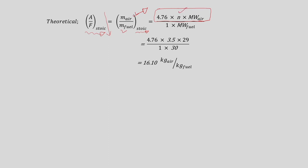Calculating this value: 4.76 × 3.5 × 29 / (1 × 30) gives approximately 16.10 kg of air per kg of fuel. This is the theoretical air-to-fuel ratio required for the combustion of ethane using air as oxidizer in the combustion chamber — the exact stoichiometric amount.